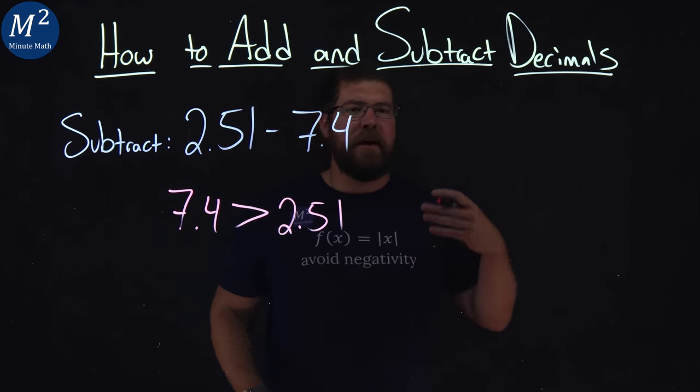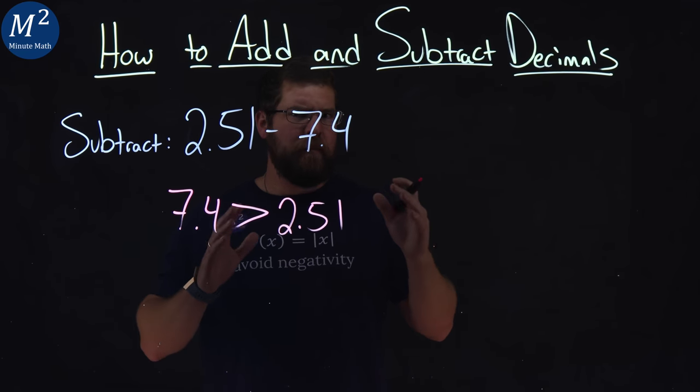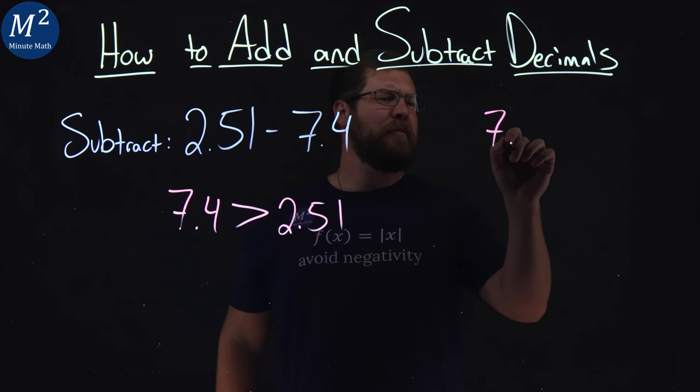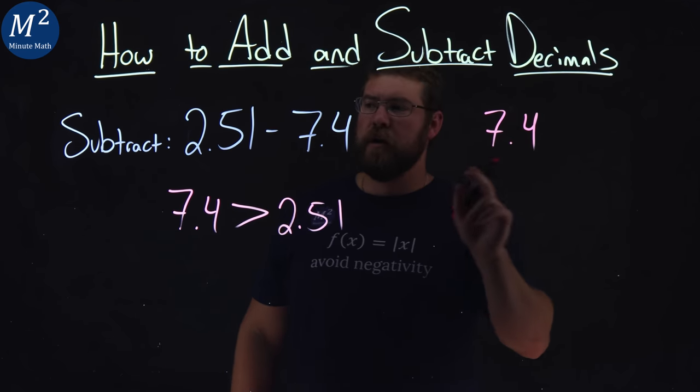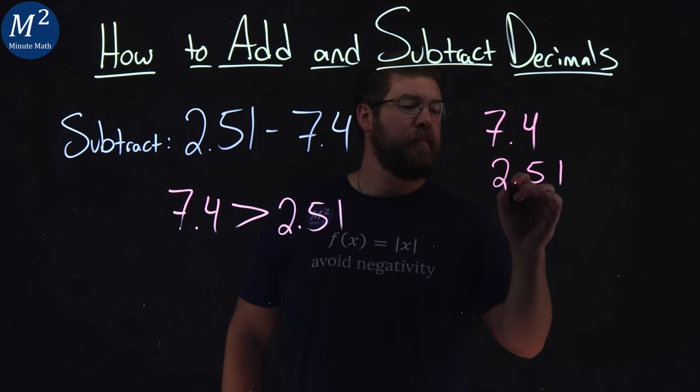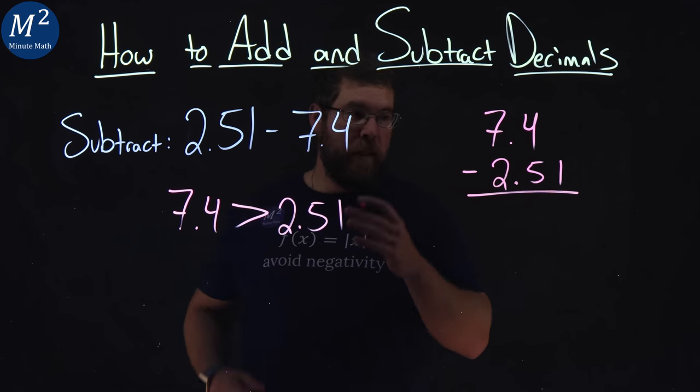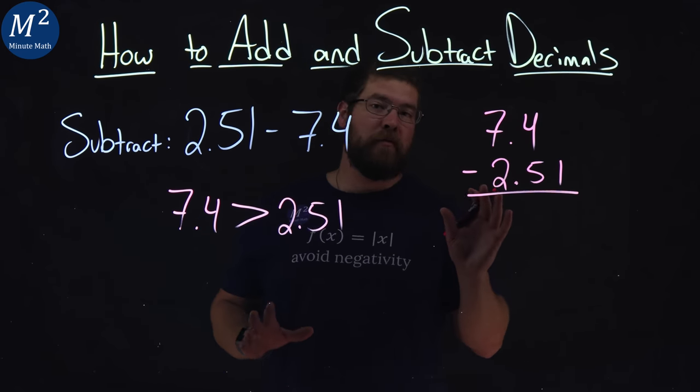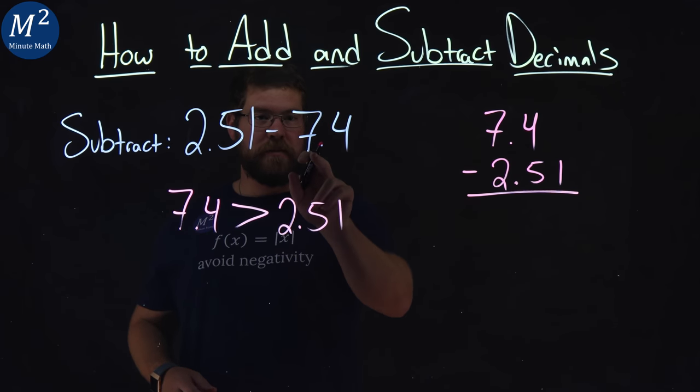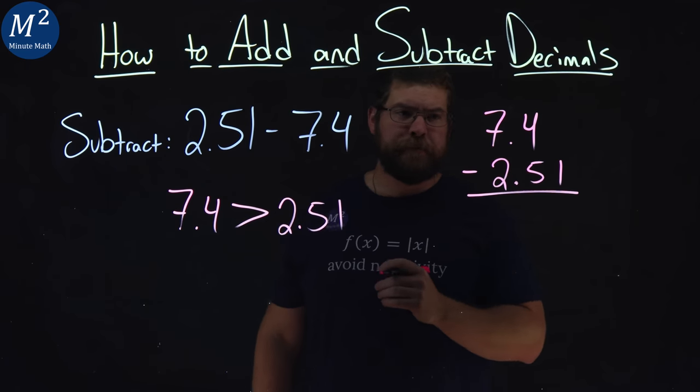When I do subtraction, I like to have the larger number first. So what we're going to do here is write 7.4 first. I'm going to line up 2.51 underneath it, and I'm just going to find the difference between these two numbers. When that's completed, I know my answer will have to be negative because 7.4 is greater than 2.51, but this makes it easier to do subtraction.